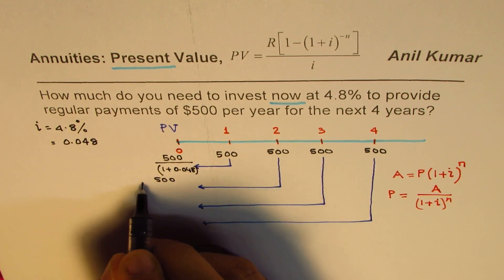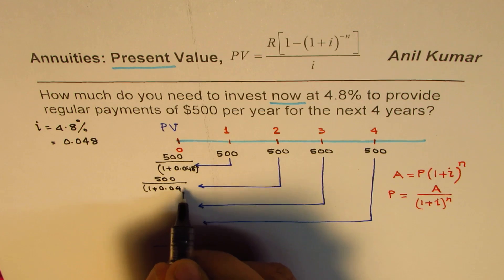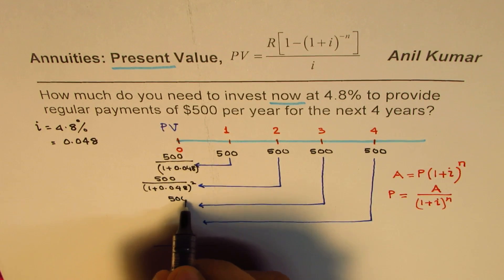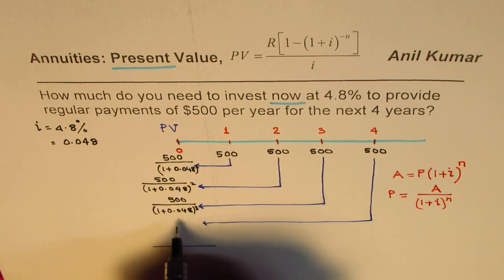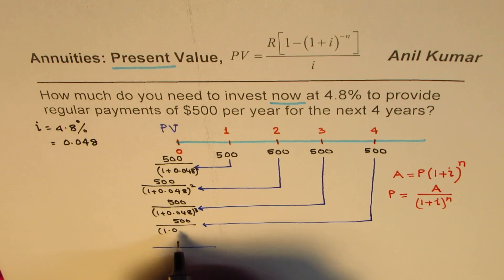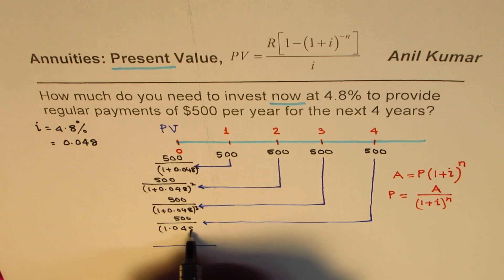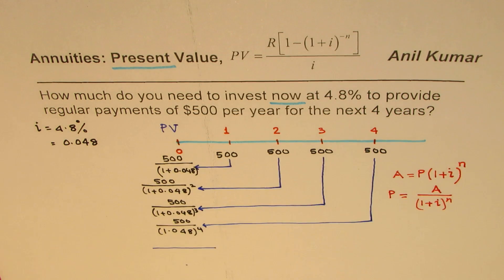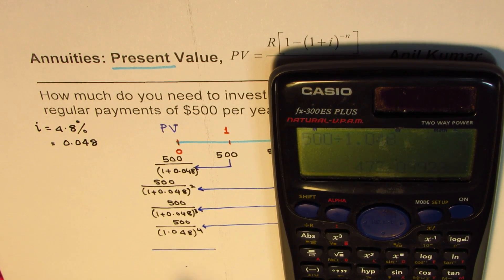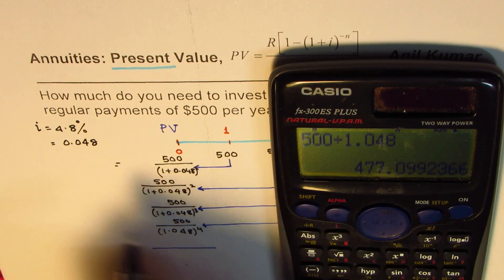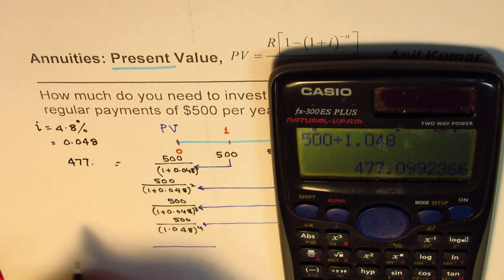For the second year it is 500 divided by (1 + 0.048)^2, and so on up to (1.048)^4 for year four. Using a calculator: 500 divided by 1.048 equals $477.10. The next one, 500 divided by 1.048 squared, gives $455.25.